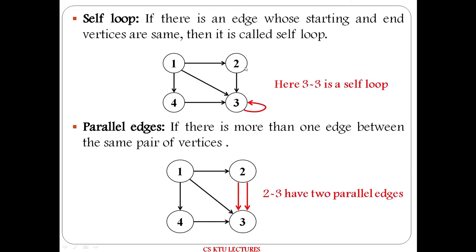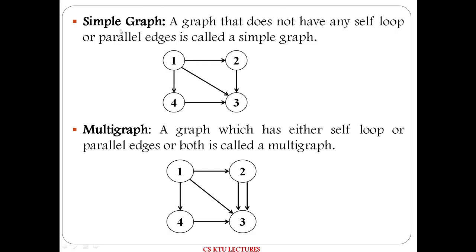Next, what is a self loop? If there is an edge from a vertex back to itself — shown in red as vertex 3 connecting to itself — it is called a self loop. Then, what are parallel edges? Two edges between the same pair of vertices, such as two edges between vertices 2 and 3, are called parallel edges. A graph with no self loop and no parallel edges is called a simple graph.